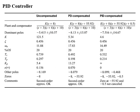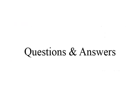The table represents the plant and compensator with dominant pair of poles, gain, damping ratio, transient specifications, higher-order poles, steady-state error, and associated constants for uncompensated, PD-compensated, and PID-compensated systems. If any of you have any questions, please ask.